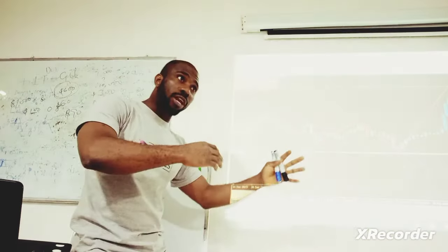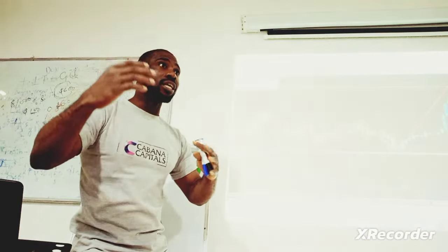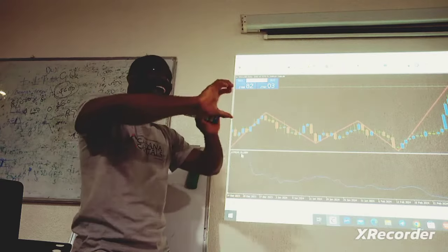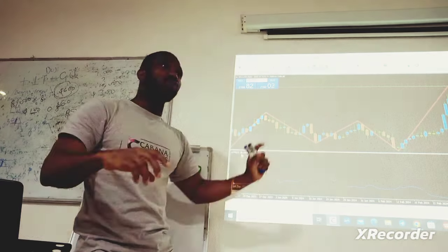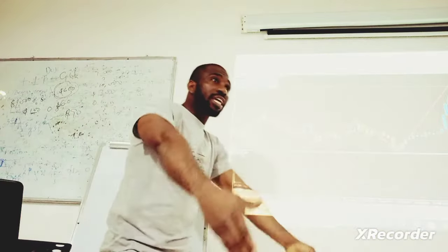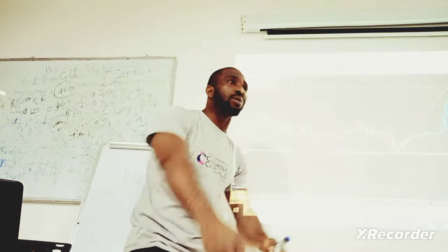Some days it was more than 261 pips. Some days it was 400, 300 pips. But the average is 261. So if I am trading gold today, my target can be 200 pips, 250 pips.